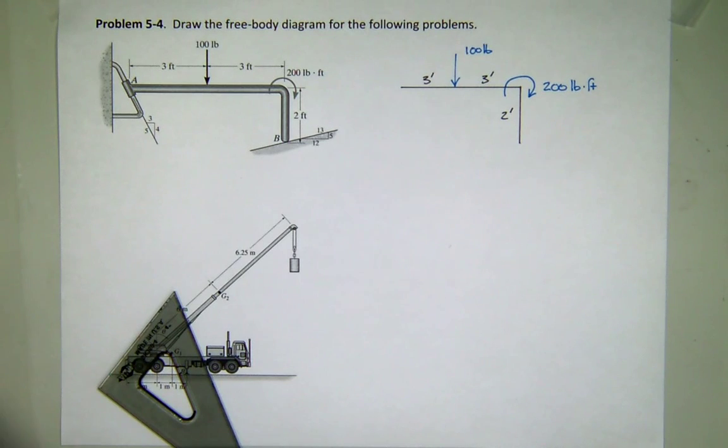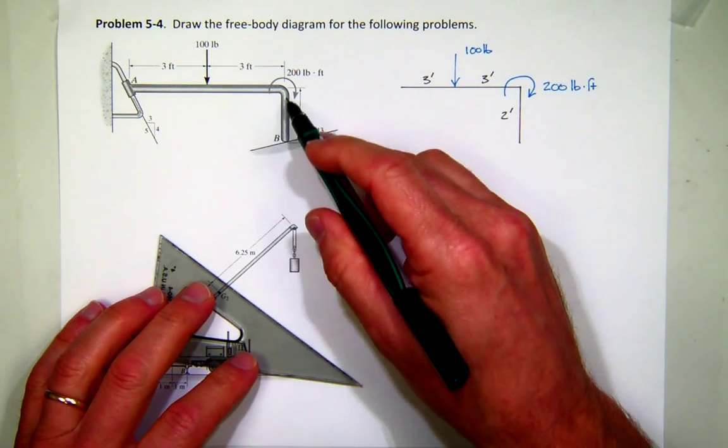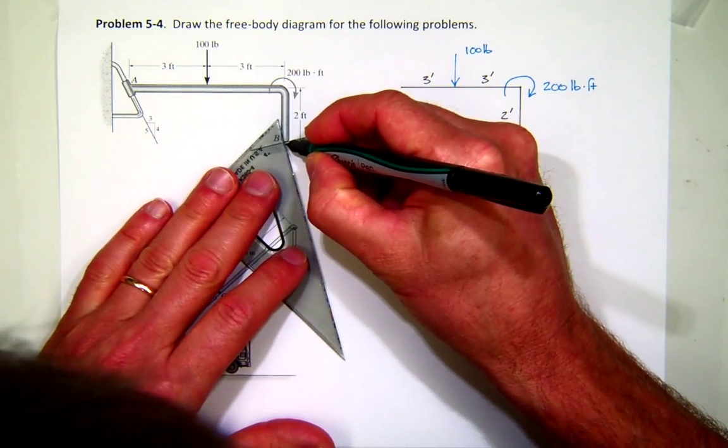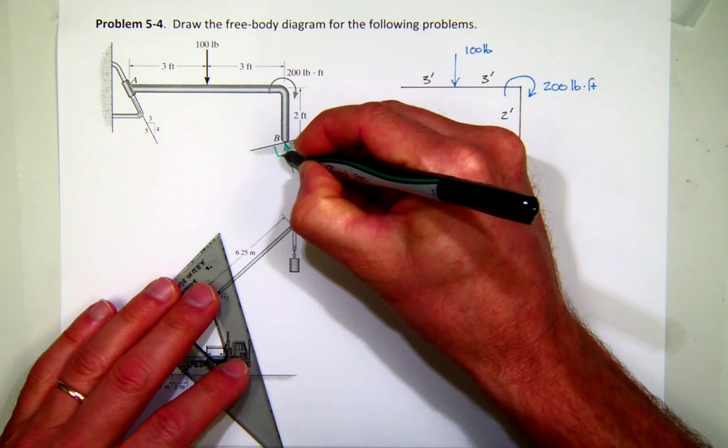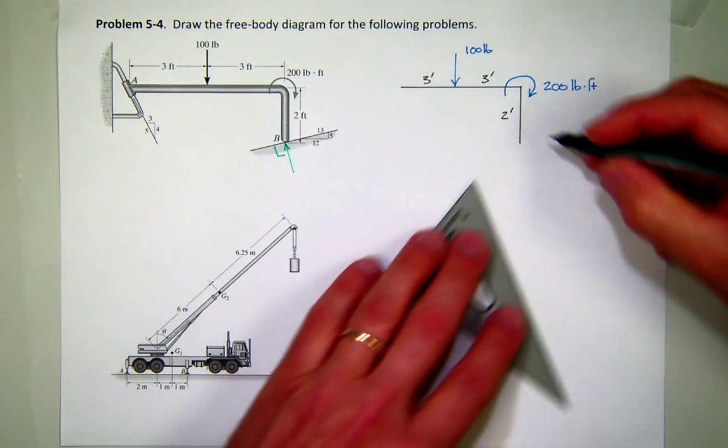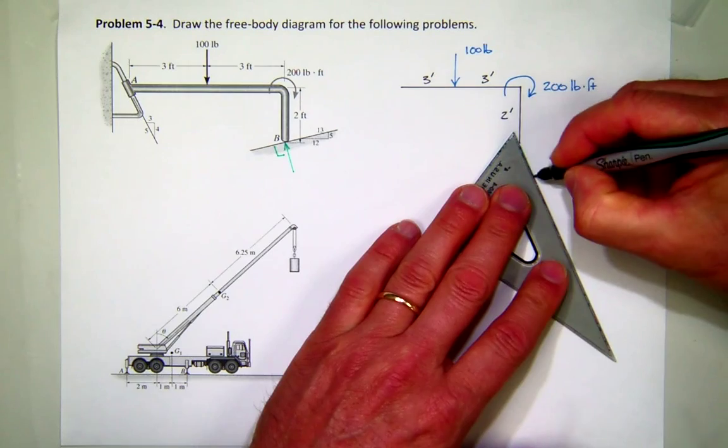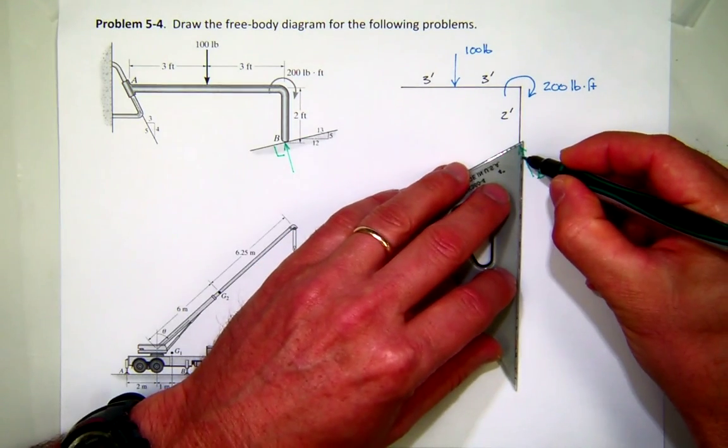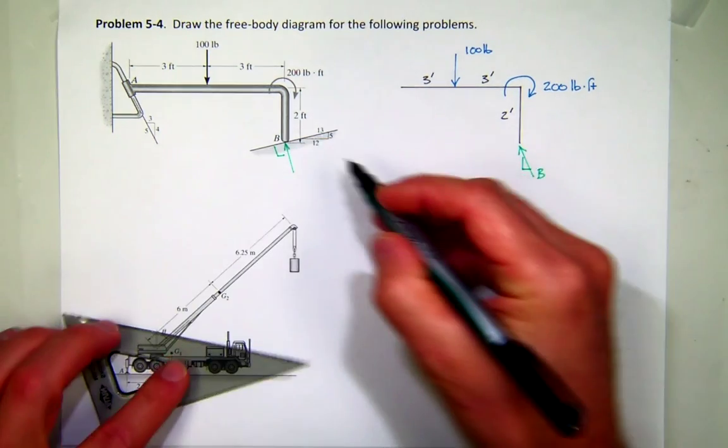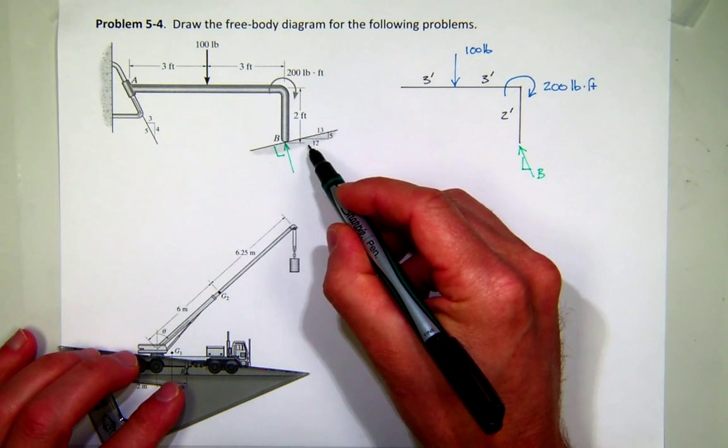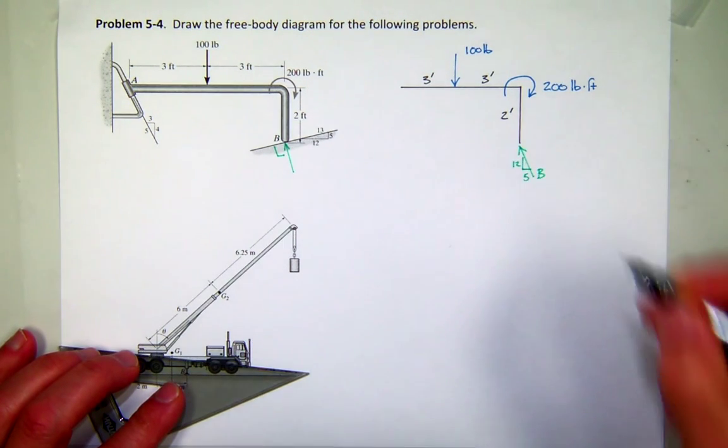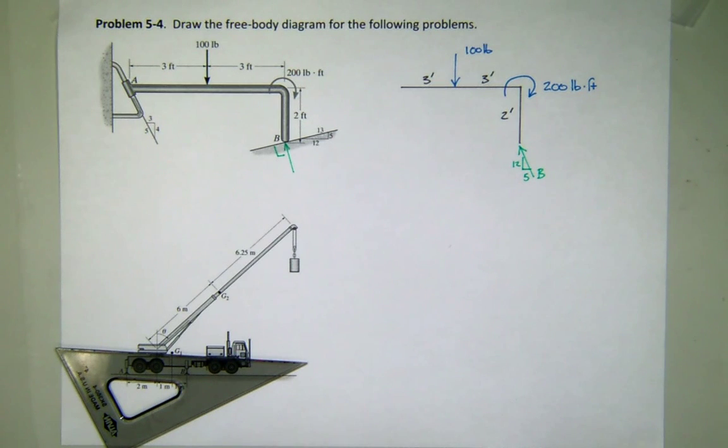And now let's put on the reactions. So B, this is a smooth contact, so I'll draw on this one just to let you know. We want the reactive force to be perpendicular. So when I draw this force over here, and I'll just call it B, I should be able to, because it's perpendicular, take this slope of 12 to 5 and change that to 5 to 12. That way it's perpendicular to that surface.